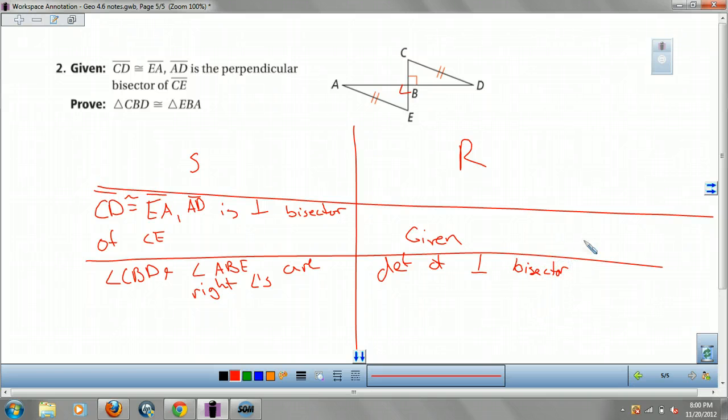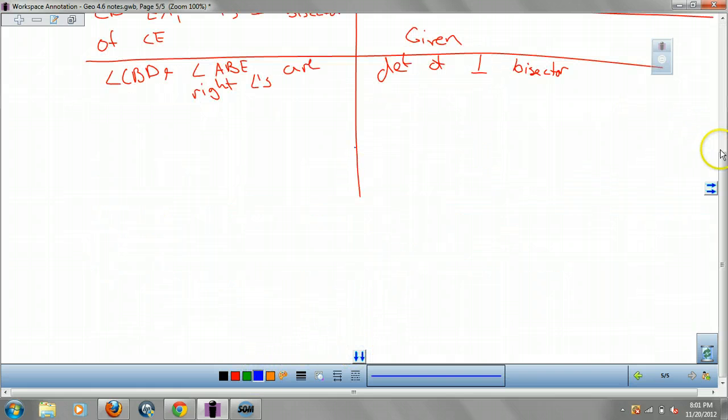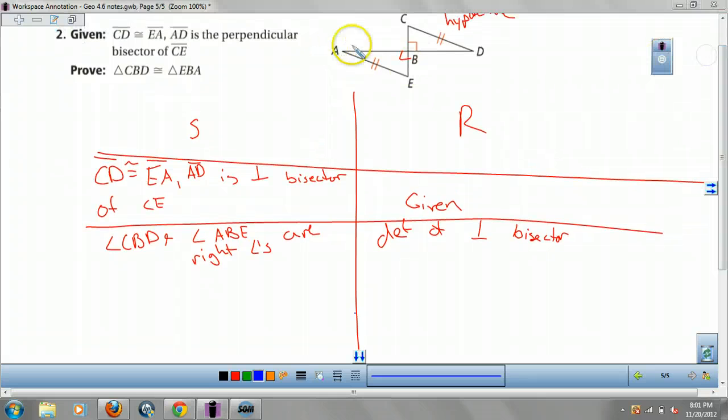Okay, so now I have my right angle. I have my hypotenuse. So now I need one more in a leg. Oh man, oh man, oh man. How am I going to do this?